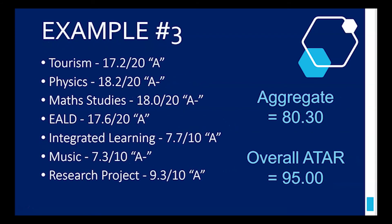Let's look at another student. This student has some 10 credit subjects. They've got tourism, physics, maths studies, EALD, integrated learning, music and research project. It doesn't matter if they're 20 credit or 10 credit ones, they'll just take the best possible combination to give you your score out of 90. This aggregate was 80.3. So 80.3 out of 90 sounds pretty good, but when you convert that to an ATAR, that's 95 out of 100. That's even better - the top 5% of all students. So you don't have to be perfect to get a high ATAR. You just have to work hard and try and get the best grades you can in your subjects.